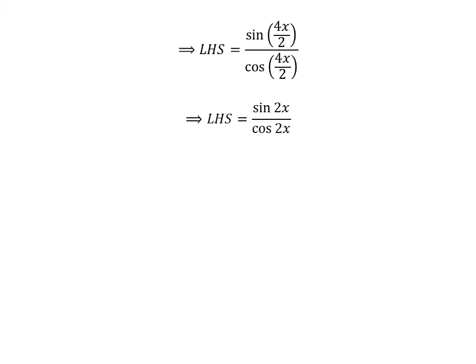Since 4 upon 2 is equal to 2, the left-hand side of the equation is equal to sine of 2x upon cosine of 2x.